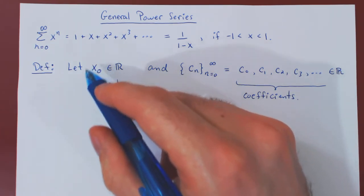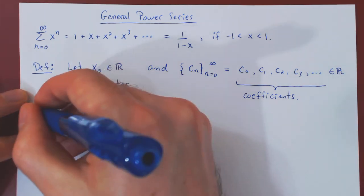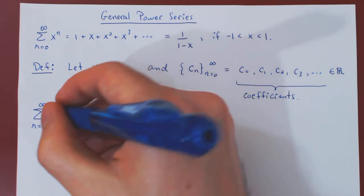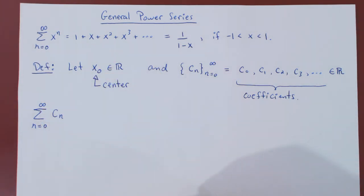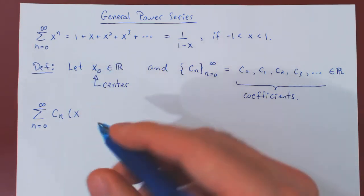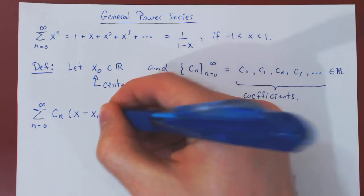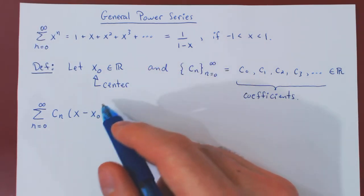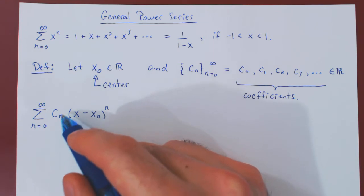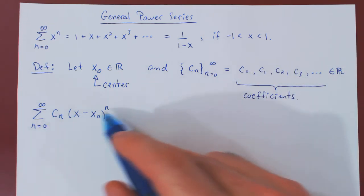Once we have picked our center and sequence of coefficients, here's how we construct a general power series. We look at the sum, n ranging from 0 to infinity, of the nth coefficient cn times x minus the center x0, raised to the power n. This is a general power series, where x0 is the center of the expansion, and the terms c0, c1, c2, c3, and so forth form the so-called coefficients of this power series.